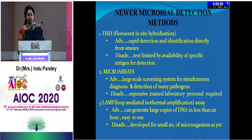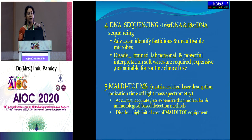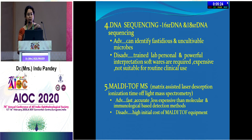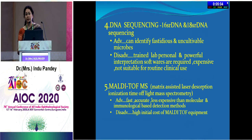Newer microbiological detection methods include FISH technique, microarrays, and LAMP assays, still in development. DNA sequencing can identify fastidious and uncultivable microbes but requires trained personnel and a powerful interpretation software, and is not suitable for routine clinical use. The MALDI-TOF MS test is fast and accurate — in a series of endophthalmitis cases at PGI Chandigarh following intravitreal injections, a Pseudomonas-type organism was identified within four hours using MALDI-TOF, though the equipment has a very high initial cost.